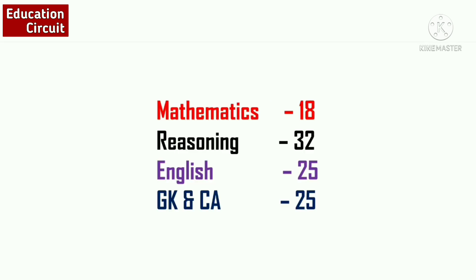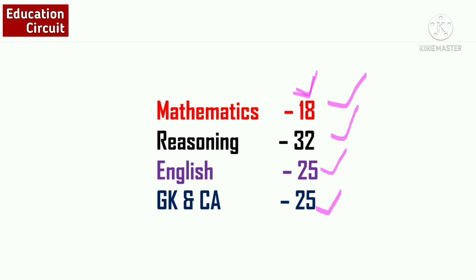There are four sections in the FCAT examination: General Knowledge and Current Affairs, English, Reasoning, and Mathematics. 25 questions come from GK and Current Affairs, 25 from English, 32 from Reasoning, and only 18 questions from Mathematics.